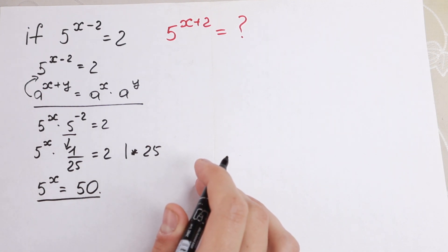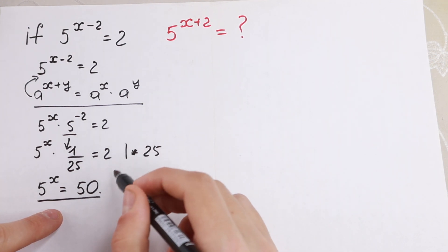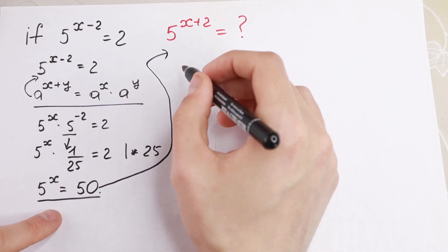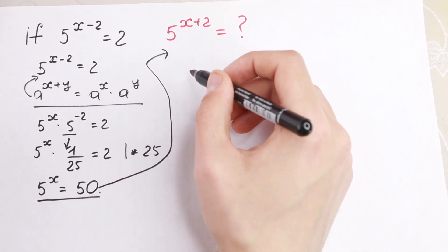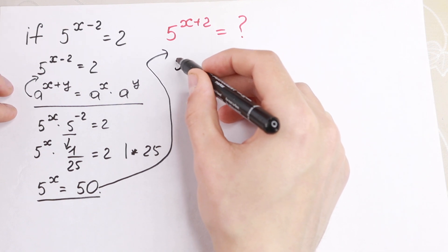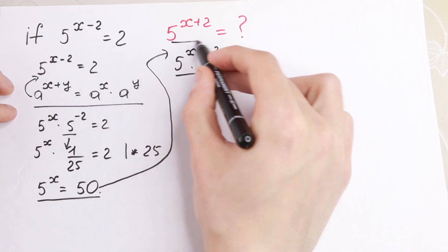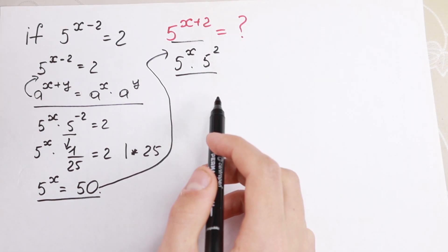And it's really good because if you find this 5 to the power x, we can easily go to this that we need to find. And 5 to the power x plus 2 we can write as well as the second case. So 5 to the power x times 5 squared. So this is the same as right here, but we use this rule.